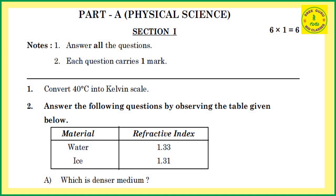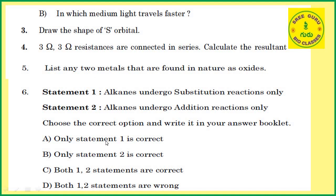Part A — Physical Science. In Section 1, answer all the questions. Each question carries one mark. There are 6 questions, so 6 into 1 equals 6 marks in Section 1.